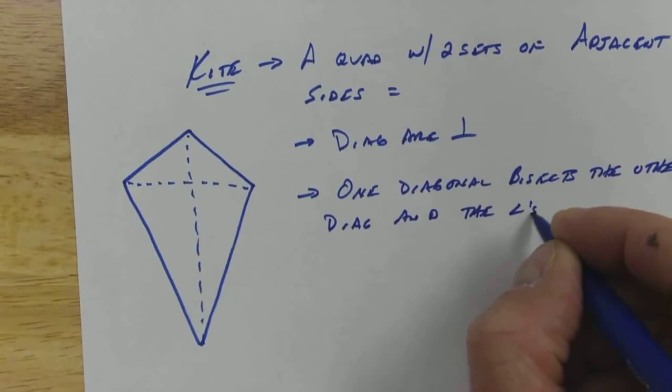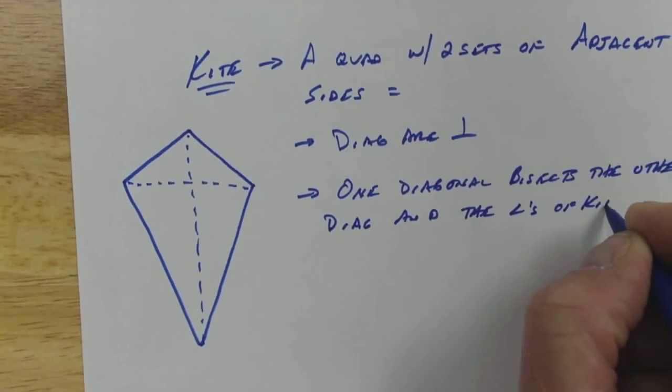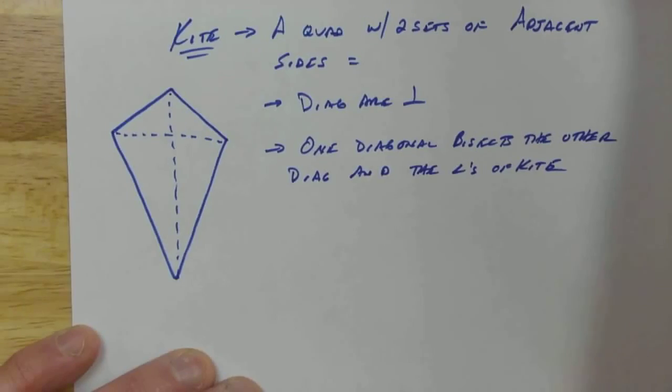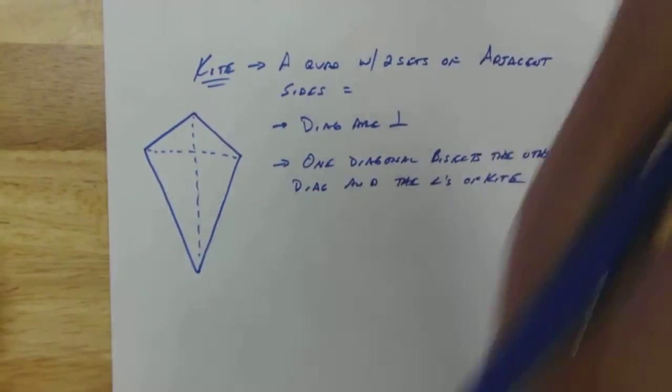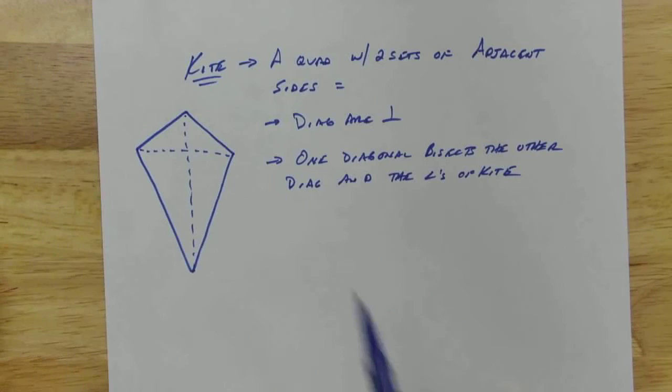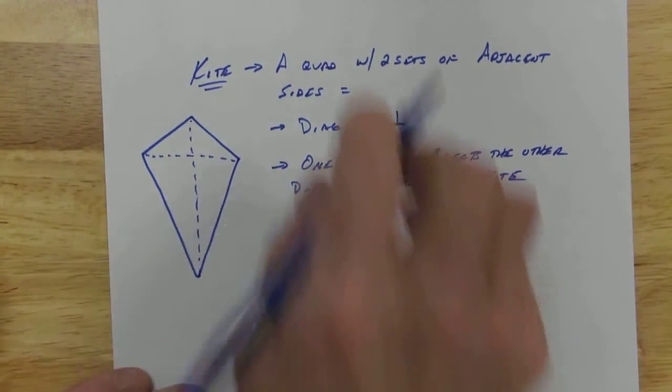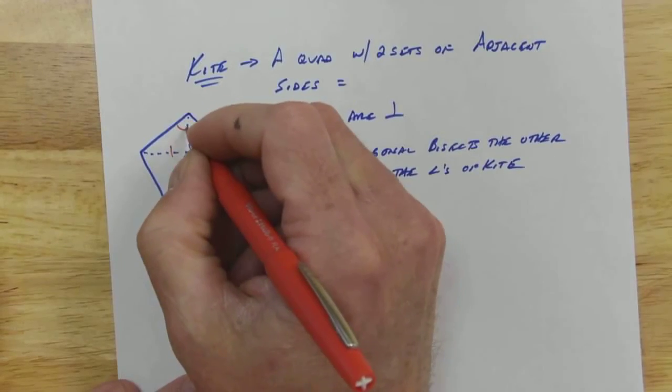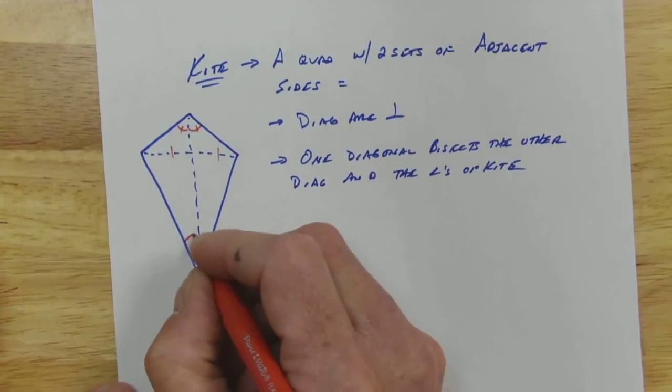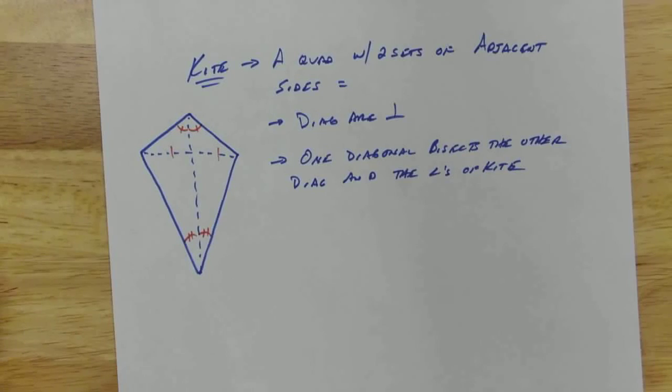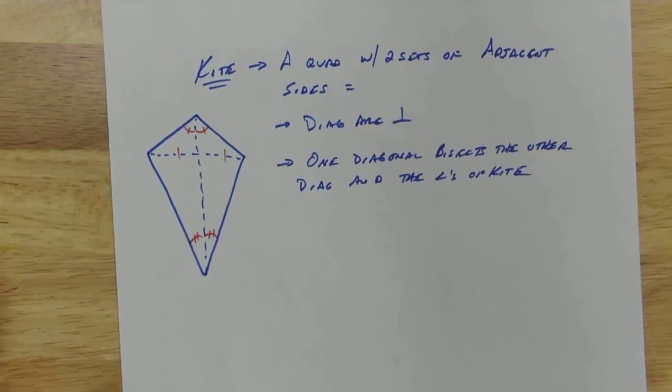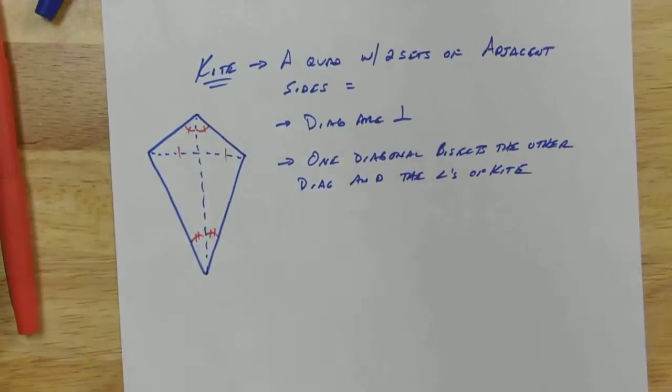And the angles of the kite - honestly if I were trying to remember the properties I would probably just draw a picture, because you guys on your quiz showed me that you can tell by the picture what properties it has. So what we've got is that's been bisected, and this angle here has been bisected, and this angle here has been bisected.